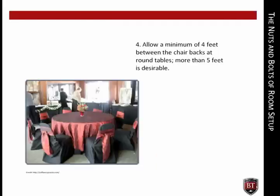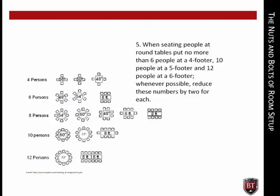Allow a minimum of 4 feet between the chair backs at round tables — more than 5 feet is desirable. Note that although full-length table linens look great, they are difficult to sit under and lead to table clearing accidents; half-length are preferred if people are getting up and down frequently. When seating people at round tables, put no more than 6 people at a 4-footer, 10 people at a 5-footer, and 12 people at a 6-footer.